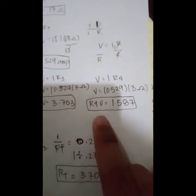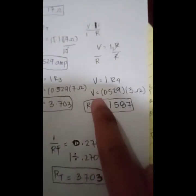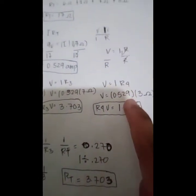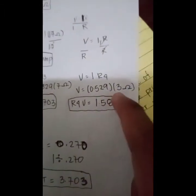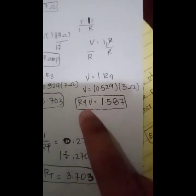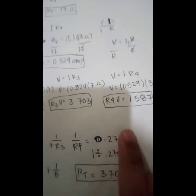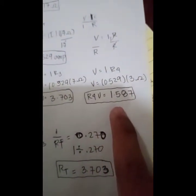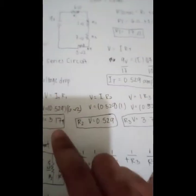For resistor 4, substituting 0.529 amperes and 3 ohms, we will have a voltage drop of 1.587 volts. And that's all — thank you.